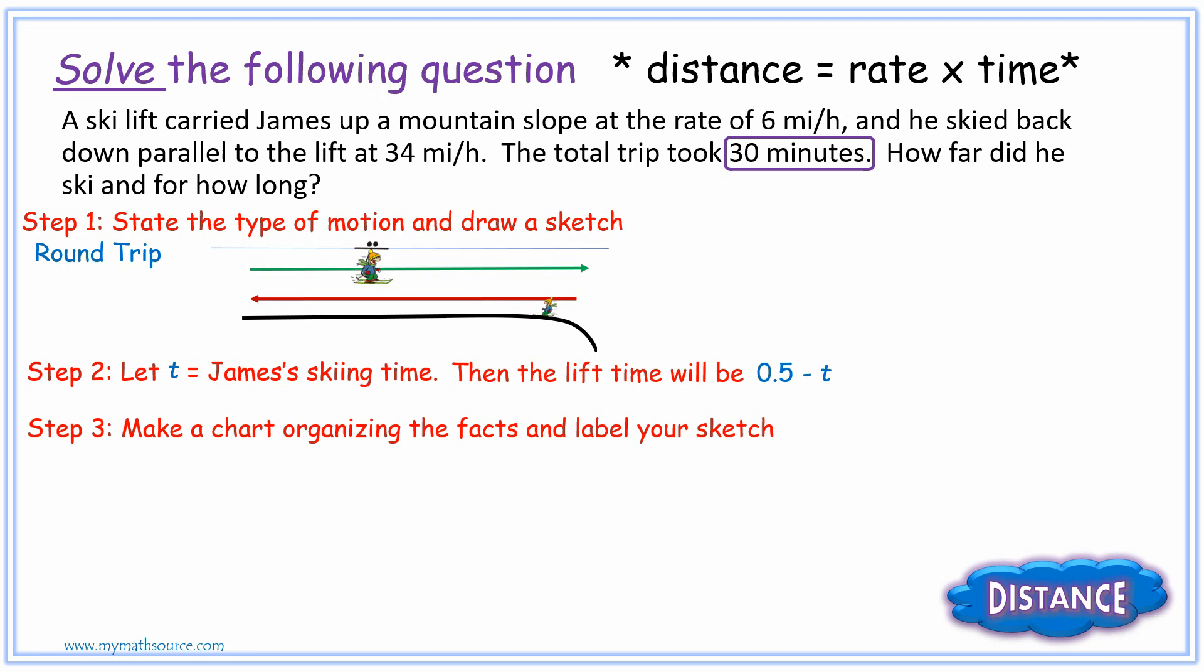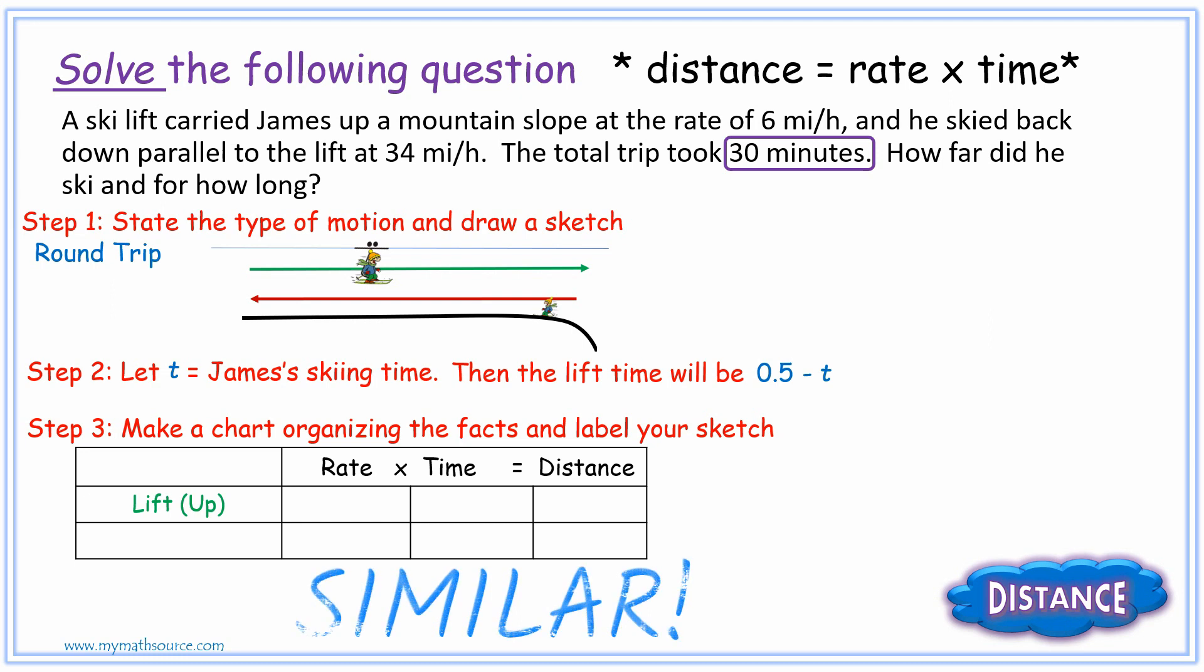Now, we're going to make a chart organizing the facts and then label our sketch. So our chart looks similar to this. We have our lift is going up, and we're going to ski back down. Skiing down, James is heading down at 34 miles per hour. The time that it took him to get down there, well, we just found that to be T.